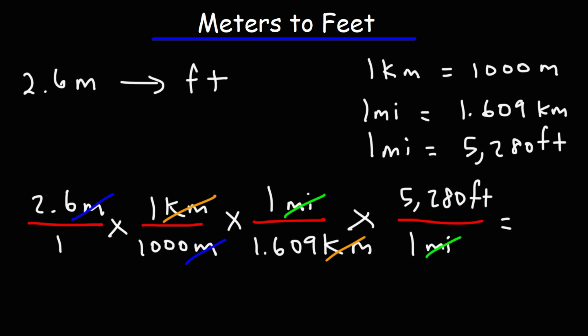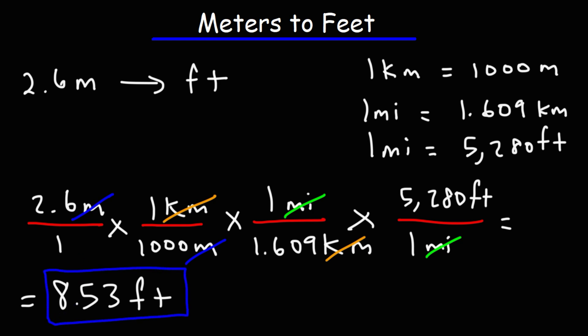Now let's do the math. We're going to multiply by the numbers on top and divide by the numbers on the bottom. So it's 2.6 divided by 1,000, take that result divided by 1.609, and then multiply by 5,280. The answer is 8.53 feet. That's how you can convert from meters to feet using common conversion factors.